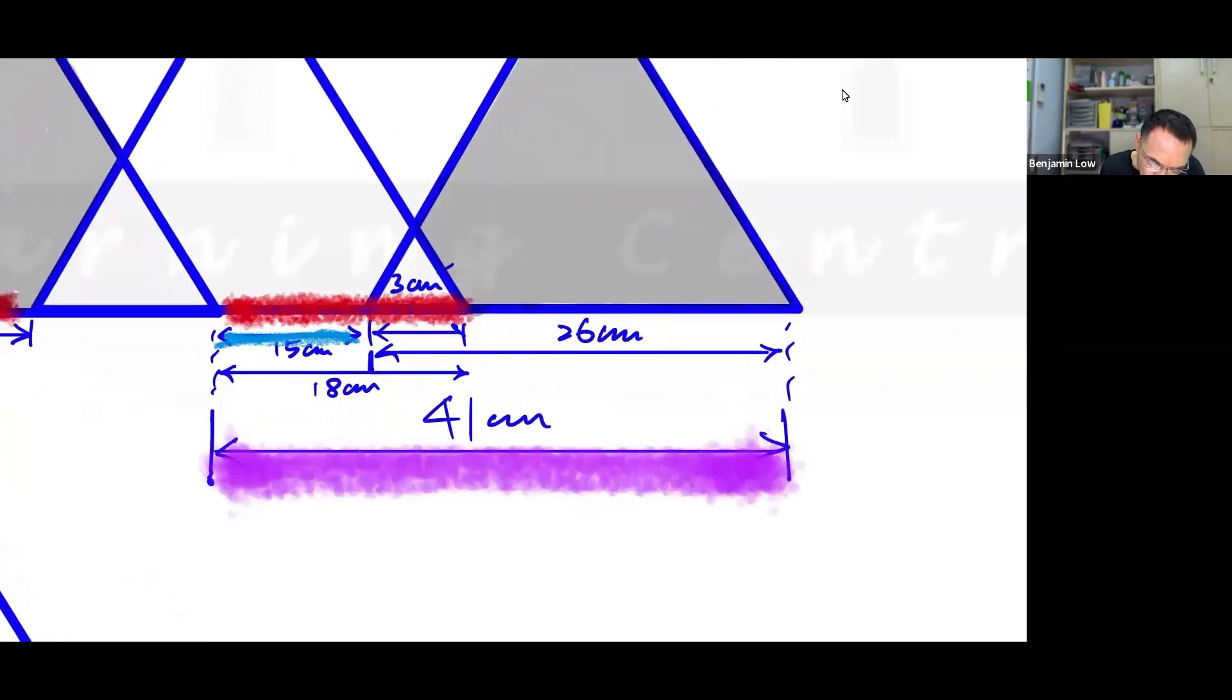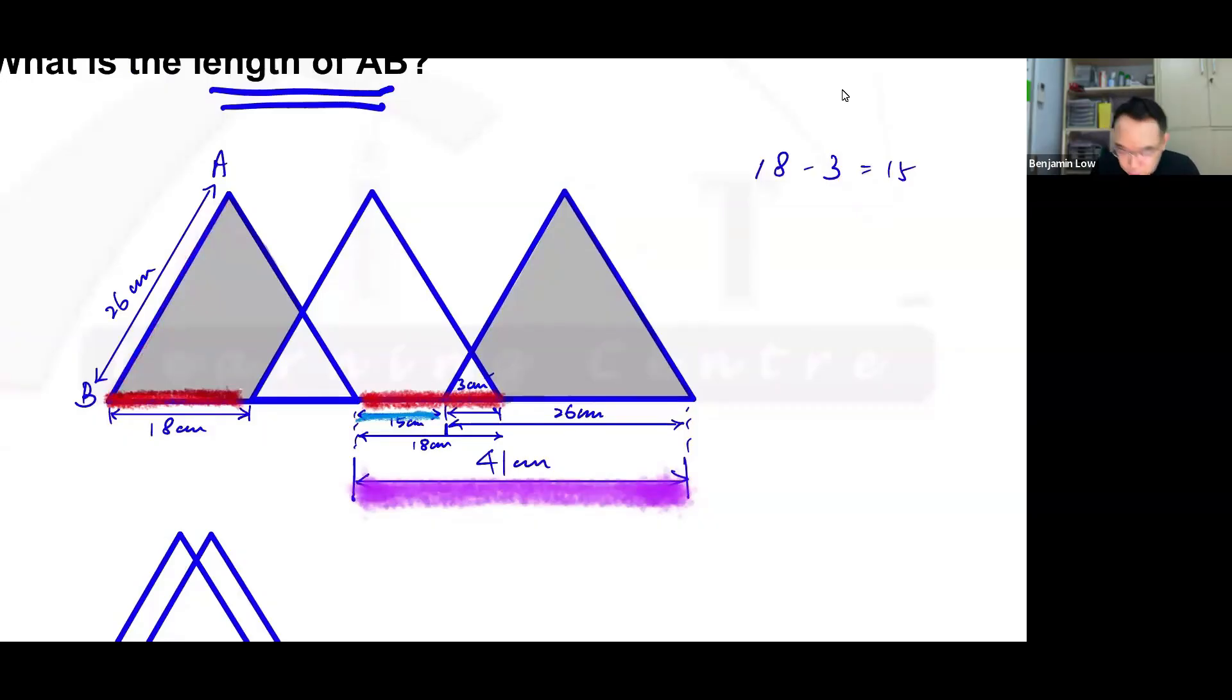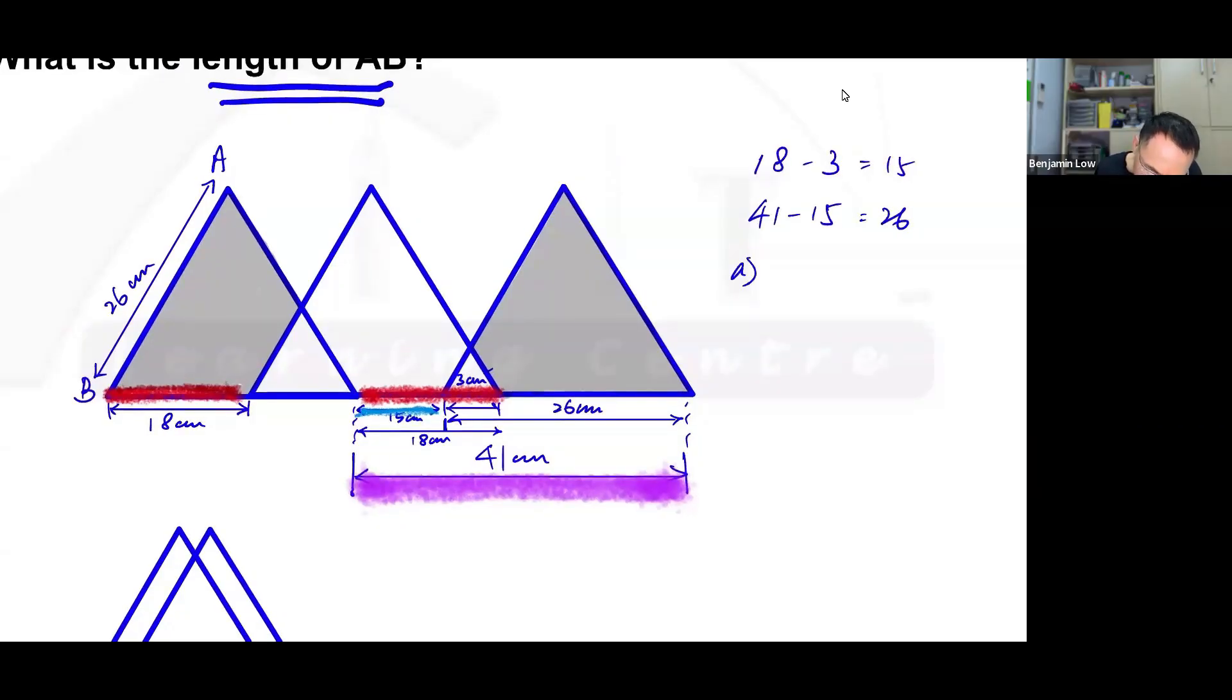So now, the next thing that we did was we took the 41 centimeters, which is the given value over here. We subtracted away the 15, and that allowed us to find this portion, which is 26, which was the answer to the question. Because the first question was, how much is AB, which is one side of the equilateral triangle. So now, I'm going to take 41 and minus away the 15, the purple minus the blue, and that gave me 26. And so, the answer for the first part of the question, A, would be 26. So AB equals to 26 centimeters.